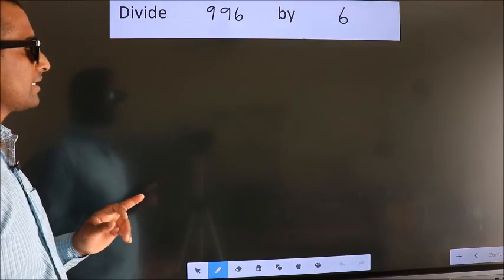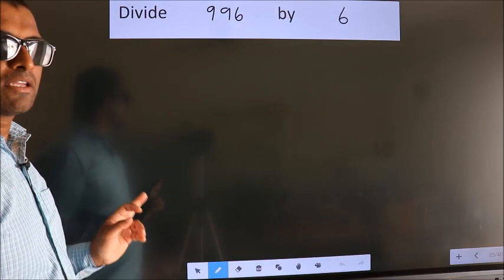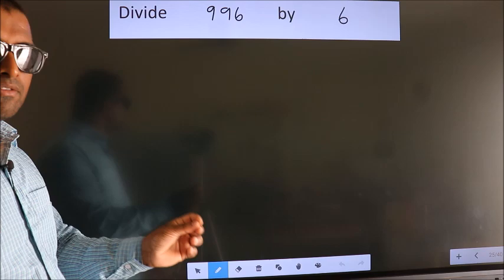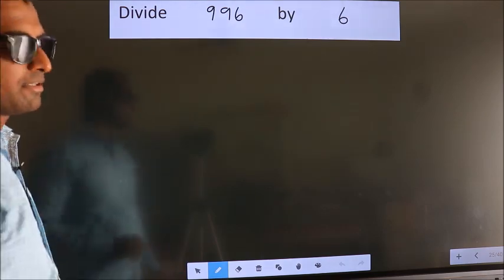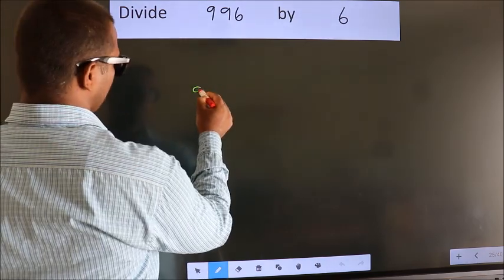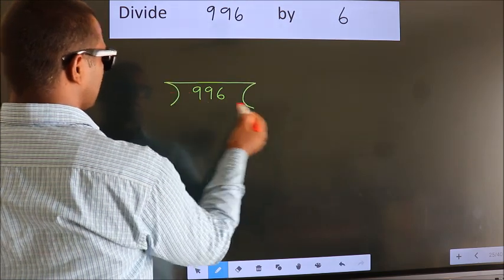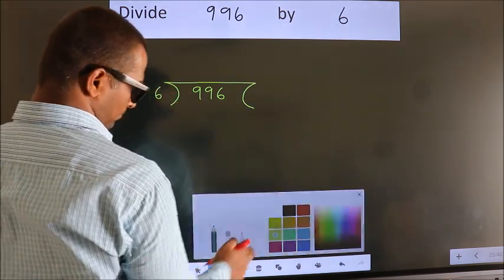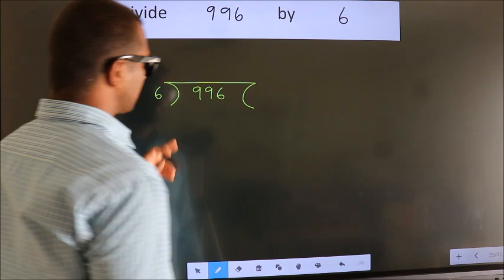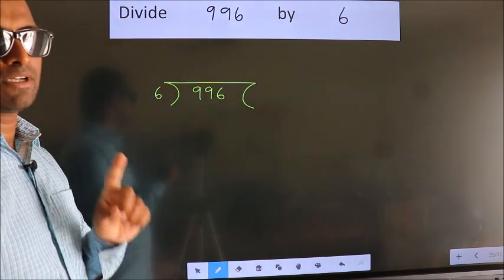Divide 9.96 by 6. To do this division, we should frame it in this way. 9.96 here. 6 here. This is your step 1.